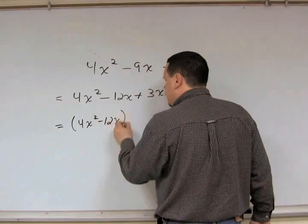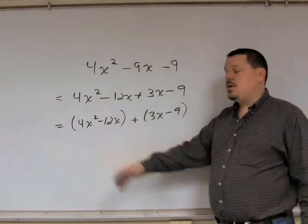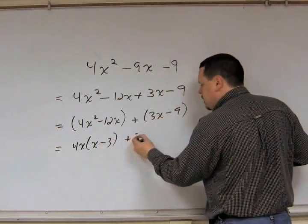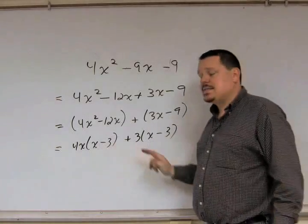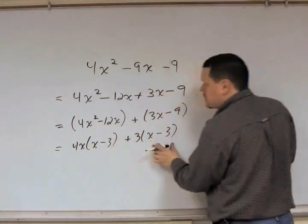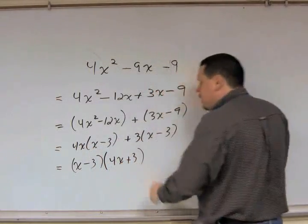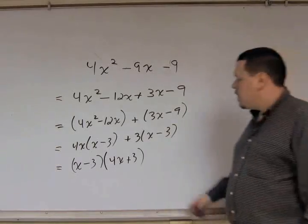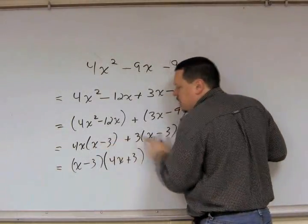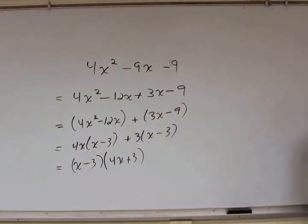Now factor by grouping: 4x² − 12x + 3x − 9. Factor out the GCF from the first group — the GCF is 4x, leaving x − 3. From the second group the GCF is 3, also leaving x − 3. You should have the exact same expression in both parentheses. Since both groups contain (x − 3), you factor that out, and what remains is 4x + 3. So the final answer is (x − 3)(4x + 3).